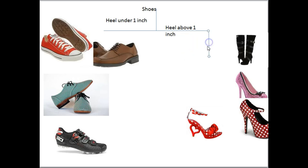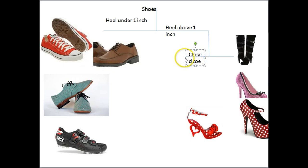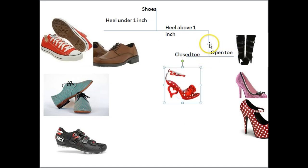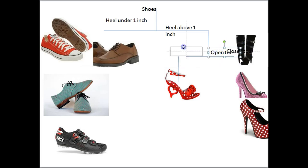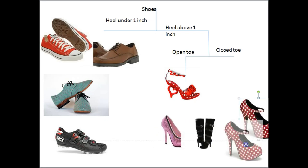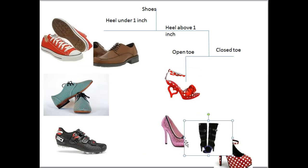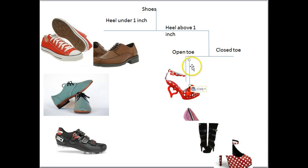Now let's break up the high-heeled shoes. Another decision point: go right one way, go left another. We decided open-toe versus closed-toe — it simply lets the reader know the decision we made on how to break up these two groups. If you have a shoe with an open toe, you go to the left, which brings you to one specific species of shoe. If you have a closed toe, you go right. We can break that group up by buckle versus no buckle.